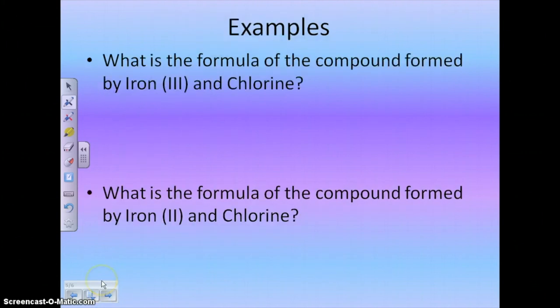So what is the formula of the compound formed between iron 3 and chlorine? Well, iron is going to have a 3 plus charge, and chlorine is going to have a 1 minus charge. So we got iron and we got chlorine. I'm going to skip writing the charges at the top. So 3 plus, which means this 3 comes here, and chlorine was 1 minus, so that 1 goes there. So it's FeCl3.